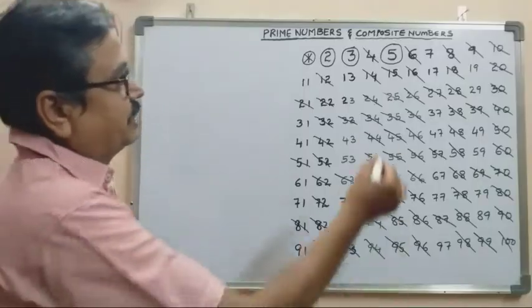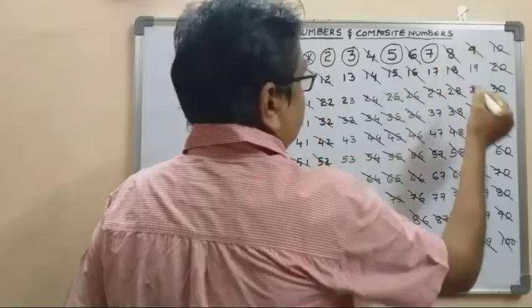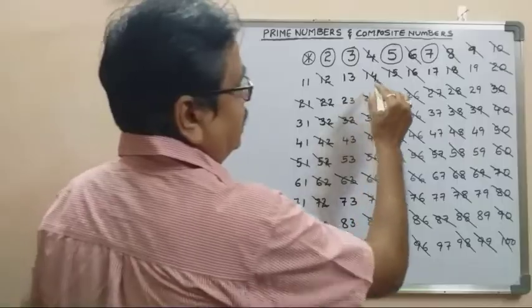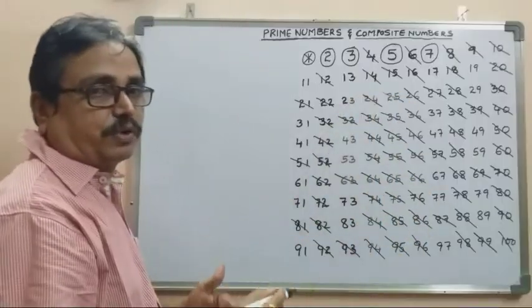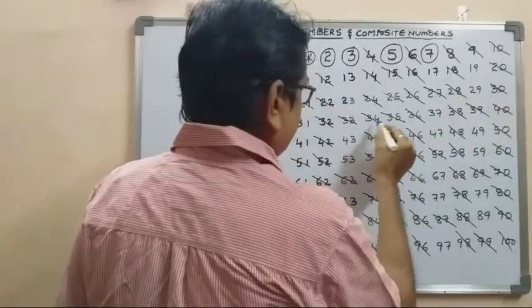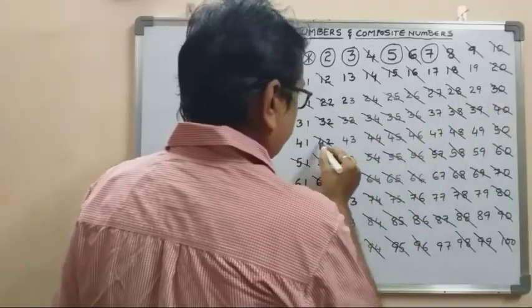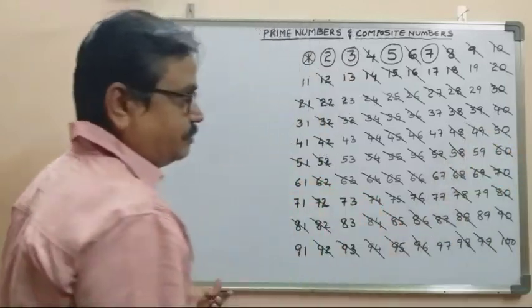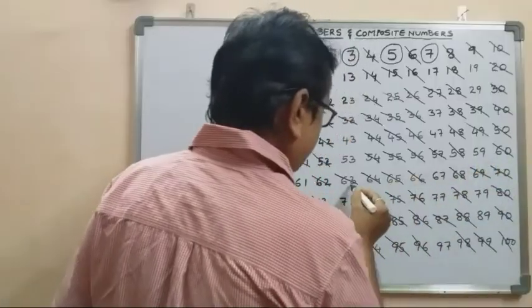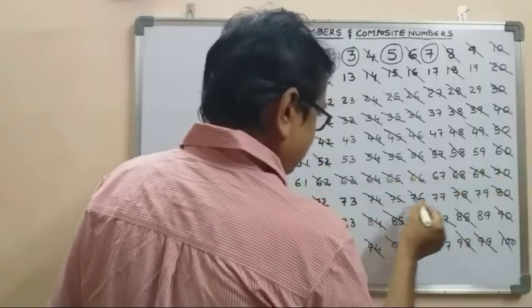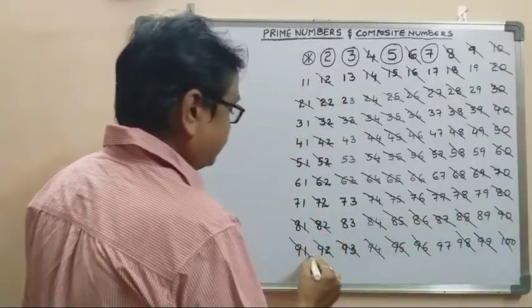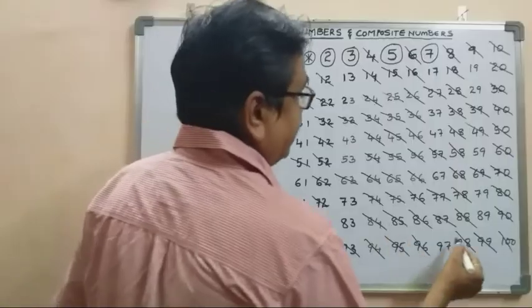Next, 7 is a prime number. Multiples of 7: 7, 14, 21, 28, 35, 42, 49, 56, 63, 70, 77, 84, 91, 98. We cancel all multiples of 7.